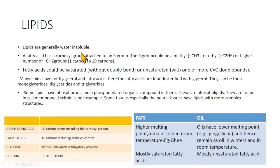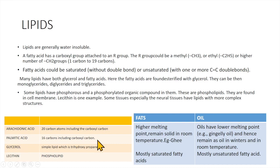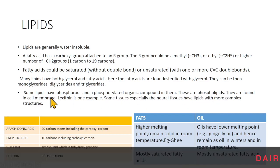Next we are going to discuss lipids. Lipids are generally water insoluble. A fatty acid has a carboxyl group attached to an R group — the R group can be methyl, ethyl, or a higher number of carbon atoms, ranging from 1 to 19 carbon atoms. For example, arachidonic acid contains 20 carbon atoms including the carboxyl carbon, and palmitic acid contains 16 carbon atoms including carboxyl carbon. Glycerol is a simple lipid which is trihydroxypropane. Lecithin is a phospholipid — some lipids have phosphorus and phosphorylated organic compounds in them. These are called phospholipids. They are found mainly in the cell membrane, particularly in nervous tissue.